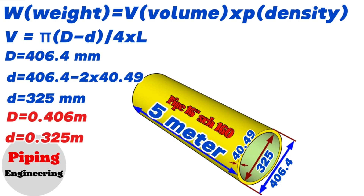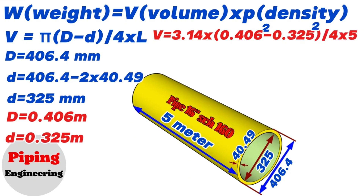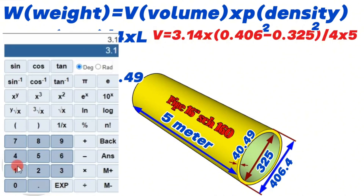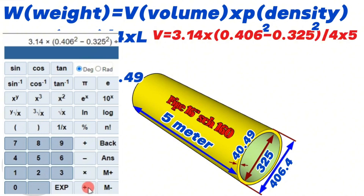Now let's write this information into the volume calculation formula. The volume of the 16-inch pipe equals 3.14 multiplied by, in brackets, 0.406 squared minus 0.325 squared, divided by 4, multiplied by 5 meters. Using the calculator, we find that 3.14 multiplied by (0.406² − 0.325²) divided by 4, multiplied by 5, equals 0.2324.